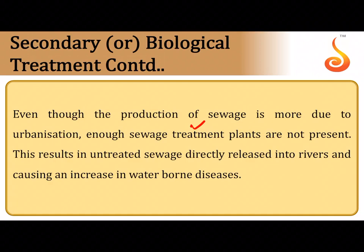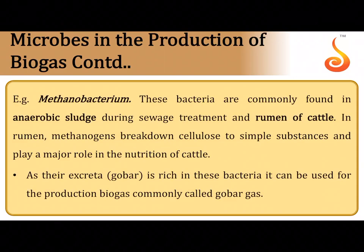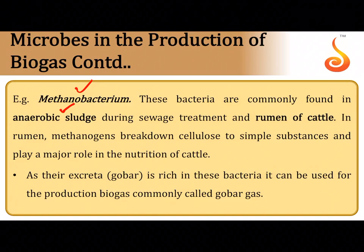Sewage also gives out a lot of biogas. There are special anaerobic bacteria called methanogens which produce methane along with carbon dioxide and water, and these bacteria are the source of biogas. The most common such bacterium is Methanobacterium, commonly found in anaerobic sludge.